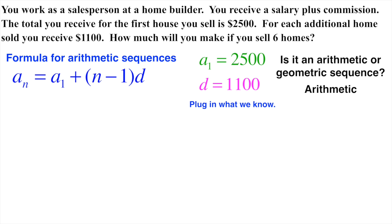The difference here is going to be $1,100, and the difference being how much money you receive per house that you sell above and beyond that first home. So now we're going to plug those in right here. A of one is our first term. Difference is $1,100 here.